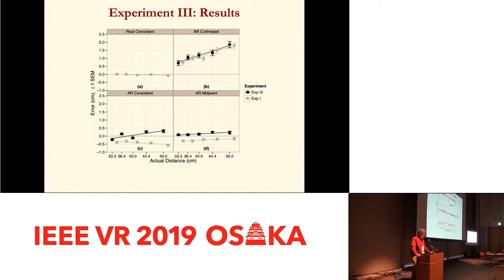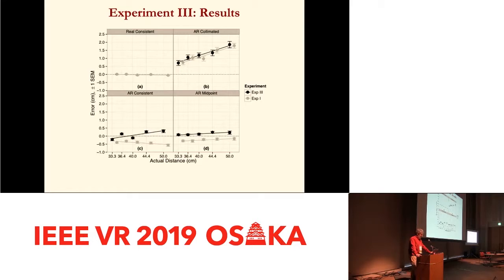Here are the results from experiment three, shown in black with experiment one in gray. The dimmer targets did not differ for AR collimated. They were more accurate for AR consistent and equally accurate for AR midpoint. So the dimmer targets did indeed increase the accuracy of the matching, but only in the consistent condition.